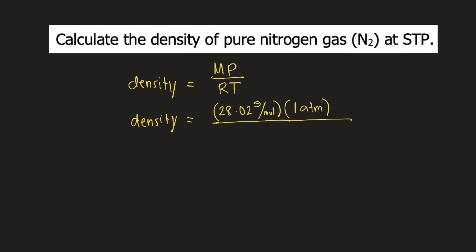R is the gas constant. That is 0.0821 liter atmosphere per mole Kelvin.